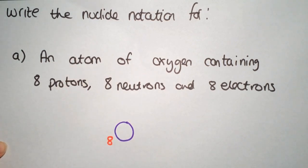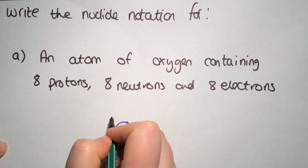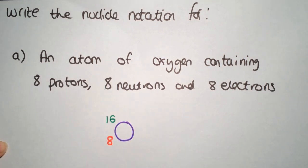Then we need to do our mass number. So our mass number is going to be 8 plus 8 to give us 16 which goes on the top. This should always be bigger than this. So make sure that you have them the right way round.